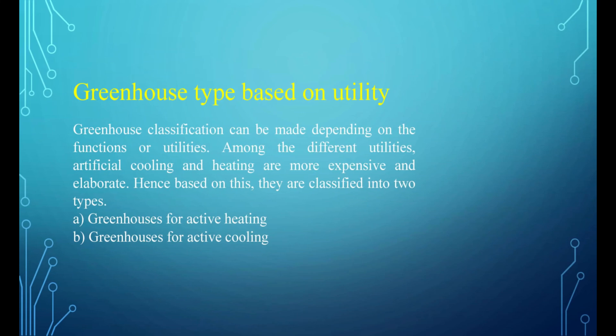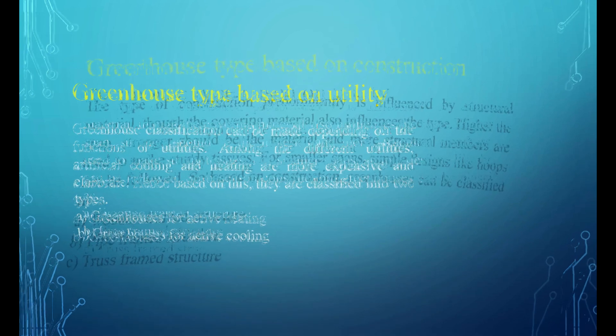Greenhouse classification can also be made depending on functions or utilities. Among the different utilities, artificial cooling and heating are more expensive and elaborate. Based on this, greenhouses are classified into two types: A. Greenhouses for active heating, and B. Greenhouses for active cooling.